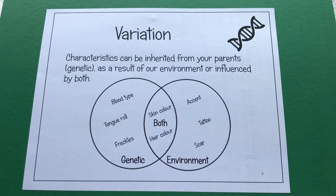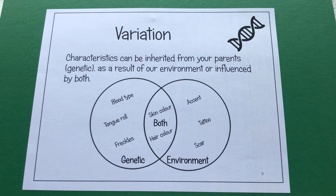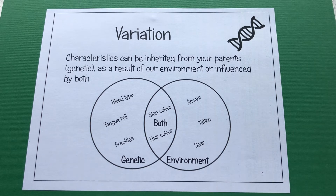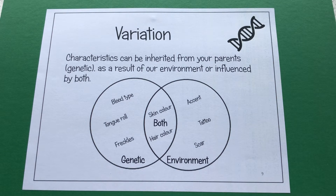This is a year eight microbes and genetics video, and we're now looking at the genetics part of the topic. Here we are looking at variation. There are two different ways that we can get variation: one is genetic, so features that we inherit from our parents, and the other is a result of our environment. As you can see from this Venn diagram, some of those things are controlled by both.